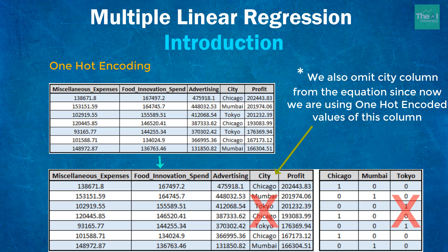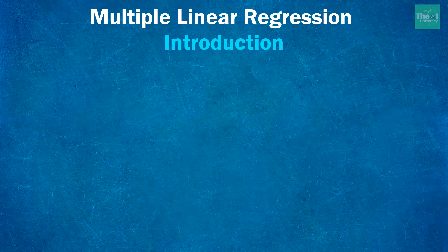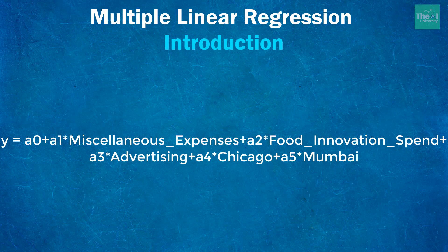If you have two sets of dummy variables, apply the same rule to each set. Our multiple linear regression equation after omitting the city column — since we are creating three dummy columns based on it, we must remove the original city column — and omitting one dummy variable will look like this: y = a₀ + a₁ × miscellaneous expenses + a₂ × food innovation spend + a₃ × advertising + a₄ × Chicago + a₅ × Mumbai. I have removed the Tokyo column and the city column to avoid multicollinearity.